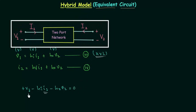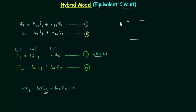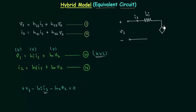Applying KVL in the clockwise direction: V1 has polarity plus-minus. Then there is a resistance HI with current I1 flowing through it. After this, there is a voltage source with polarity plus-minus and magnitude HR·V2. This is the equivalent circuit obtained from Equation 3.